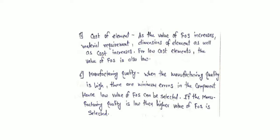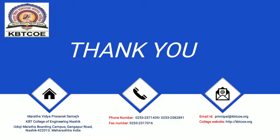The last two factors are cost of the element and manufacturing quality. As the factor of safety value increases, cost increases — so for low-cost material, the factor of safety is low, and for high-cost material it is high. Regarding manufacturing quality: when high-quality manufacturing processes like CNC machining are used, the factor of safety can be kept low; when lower-quality machinery is used, a higher factor of safety is selected. This concludes the discussion on factor of safety and its selection. In the next lecture, we will see numericals based on preferred number series and factor of safety.